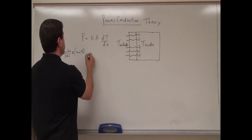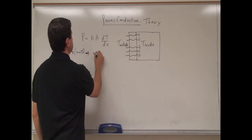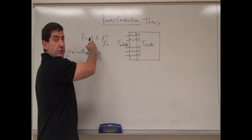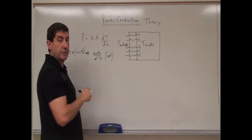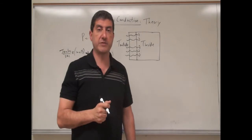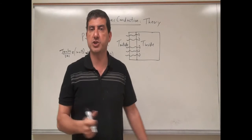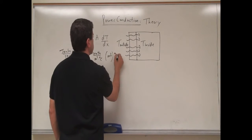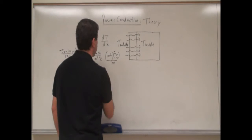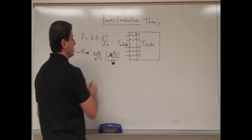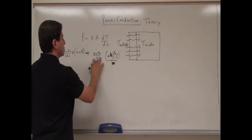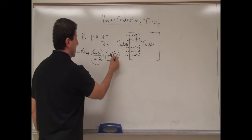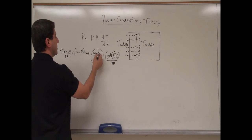K is the conductivity of the material, measured in watts per meter Celsius. The units have to work out: surface area is in meters squared, the change in temperature can be in Celsius — since changes in Kelvin and Celsius are identical — and the thickness dx is in meters. The meters cancel the meters, the Celsius cancels the Celsius, and the watts equal watts. So K must have units of watts per meter Celsius.